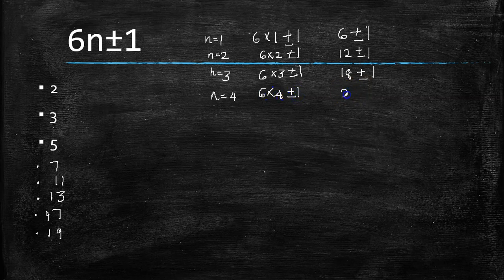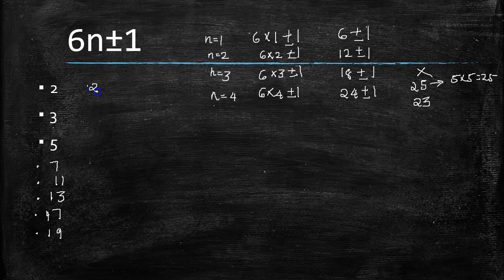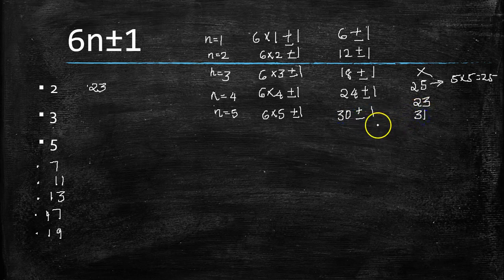For n = 4: 6 × 4 = 24, so 24 − 1 = 23 — a prime. For n = 5: 6 × 5 = 30, so 30 + 1 = 31 and 30 − 1 = 29 — both are primes.